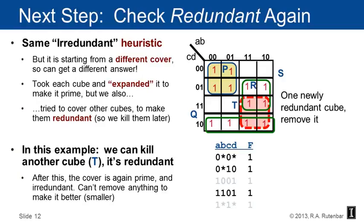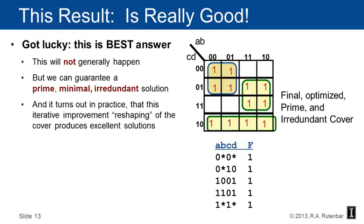Running the irredundant heuristic again from this different cover, we can kill the t cube. Cube t — the bottom-right two-by-two square of the Karnaugh map, rightmost two columns and bottom two rows — can go away as a result of irredundant. After this, the cover is again prime and irredundant, and nothing can be removed to make it smaller, so it is a local optimum.